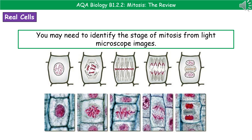One thing the exam could ask you to do is identify cells undergoing mitosis and describe what's happening based on light microscope images. We're good at identifying these from clear textbook diagrams, but you really need to look at light microscope images too. The light microscope images at the bottom with corresponding textbook diagrams above should help. For example, in the middle image, you can see all the chromosomes are lined up along the equator — so we know that cell is undergoing mitosis.